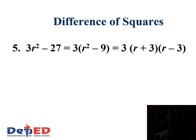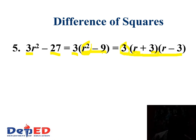Another example: we have 3r² minus 27. Do we have a greatest common factor? Can we factor out 3? Yes. So the GCF is 3. Factoring out 3, we have now r² minus 9. Both r² and 9 are perfect squares. The square root of r² is r, and the square root of 9 is 3. So the factors are 3, times (r + 3), times (r − 3). Don't forget to include the 3, because it belongs to the factors.